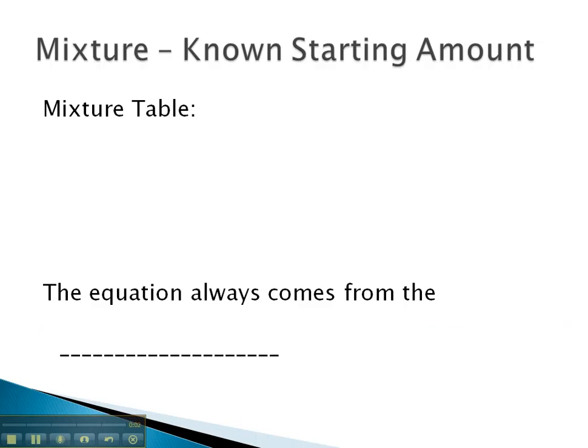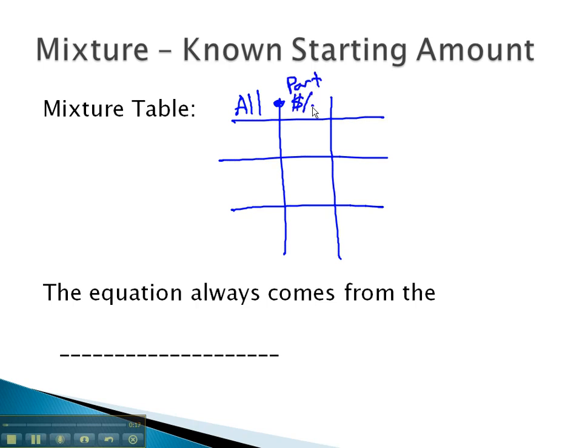In this video, we will look at solving mixture problems, where we organize our information in a mixture table. The mixture table will be unique in that we get one extra row. If we take all of the solution and multiply it by the part, whether that part is the amount of dollars it's worth or the percent it's worth, that will equal the amount of that in the final solution. The equation will always come from the last column that we'll use to solve and answer the question.